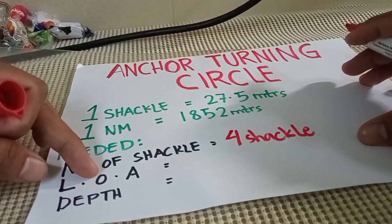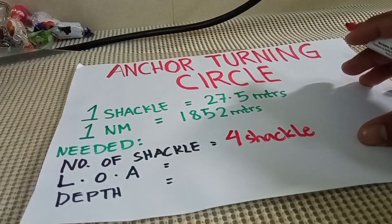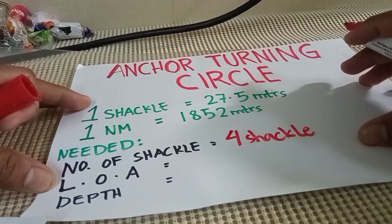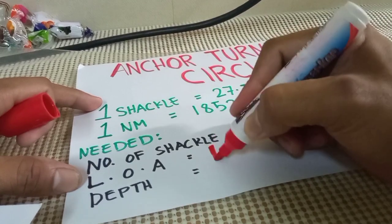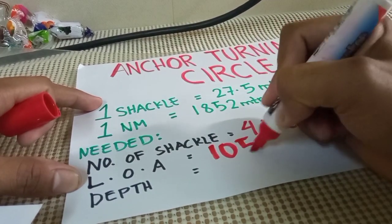And then length over all. So length over all of your vessel. So let's say that the length over all of your vessel is 105 meters.